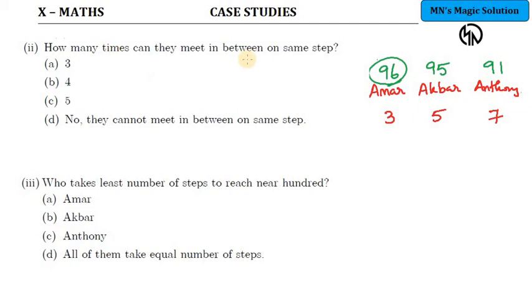Second subdivision - how many times can they meet in between on same step? Same step to meet, it should be the least common multiple. The common multiple for all three - they can meet at the same place. All three of them to meet, you have to find which one? LCM. So LCM of three, five, seven - they do not have any common factors. So it is going to be the product of these three numbers - fifteen into seven is nothing but one hundred five. So LCM one hundred five means one hundred fifth step they can all meet together. But one hundred five is outside our scenario. So they cannot meet in between on the same step. So the option is option D.